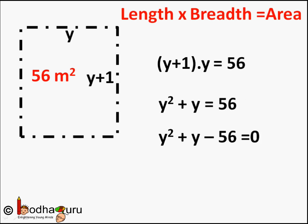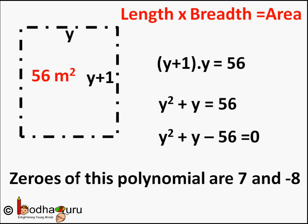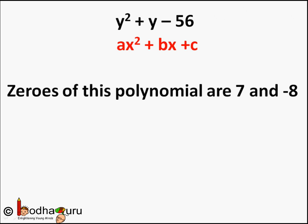Hello friends. In our last lesson we learned how to solve the equation y² + y - 56 = 0 by finding the zeros of the polynomial y² + y - 56. We used the factorization method of ax² + bx + c to solve it, and we got the factors as (y + 8) and (y - 7). This is what we did in our earlier lesson.